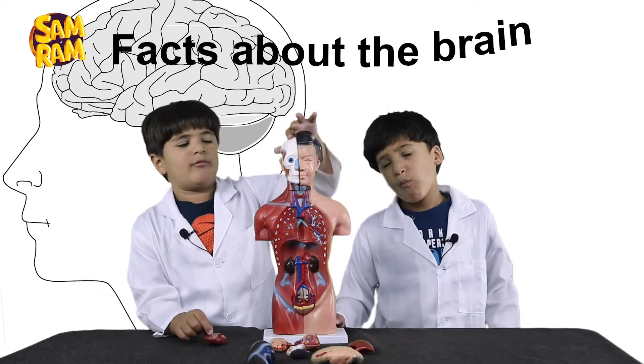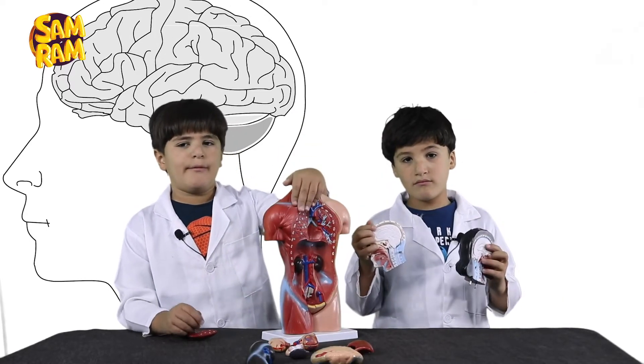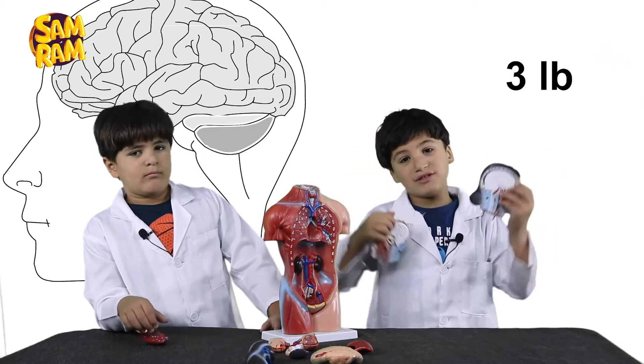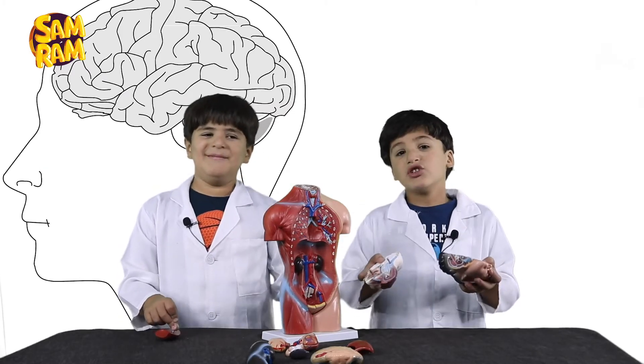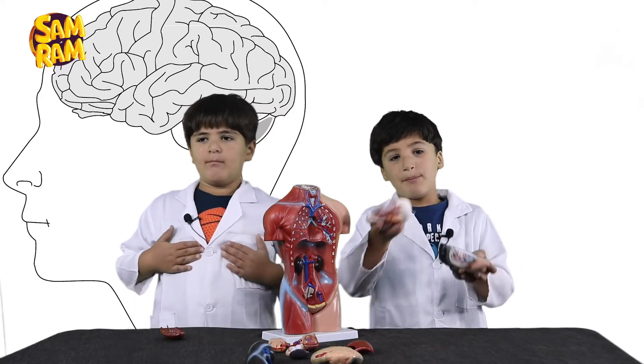I will give you some facts about the brain. 75% of our brain is made with water. The adult brain is around 3 pounds. Headaches are caused by chemical reactions. The brain gets 20% of oxygen from all the body.